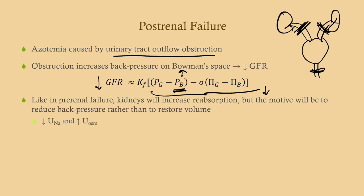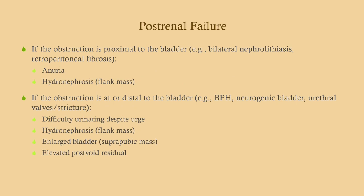Similar to pre-renal failure, the kidneys will increase reabsorption — but here it's to reduce pressure in the urinary tract rather than to maintain intravascular volume. You'll see similar findings: decreased urine sodium due to reabsorption and increased urine osmolality because water is being reabsorbed and urine is concentrated. If the obstruction is proximal to the bladder (i.e., at the ureter), you will see anuria, because urine isn't reaching the bladder, along with hydronephrosis. Remember, anuria only occurs if the obstruction is bilateral.